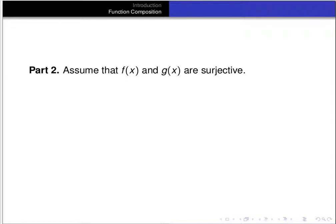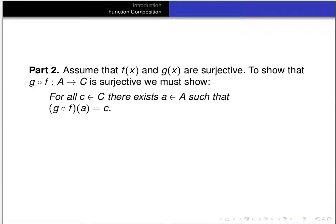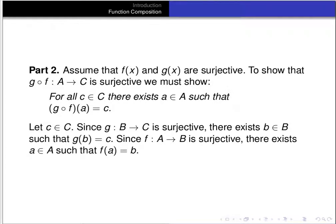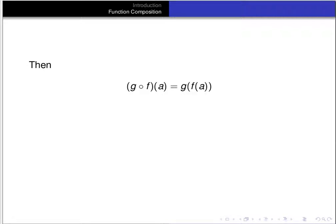For Part 2, assume f and g are surjective. We need to prove that g ∘ f is surjective — that is, for every element in C, there's something in A so that g ∘ f(a) equals that element. Let's pick an element c in C. Since g from B to C is surjective, there's some b in B such that g(b) = c. And since f is surjective, there's some a in A so that f(a) = b.